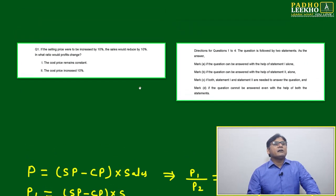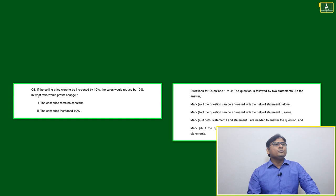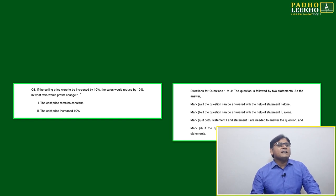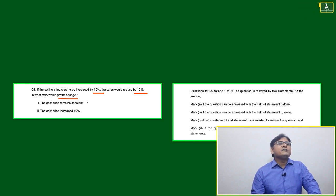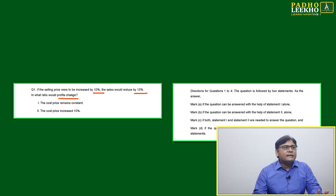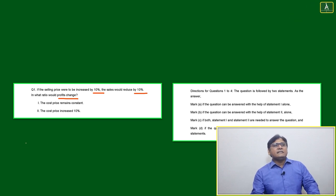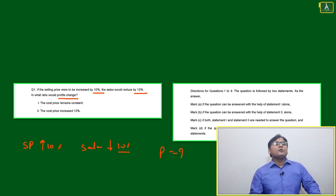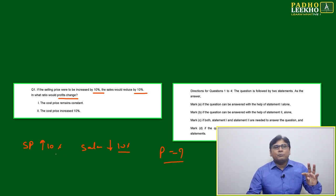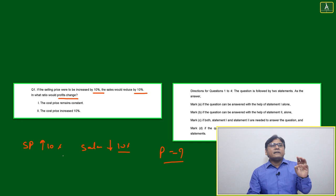Question number one: if the selling price were to be increased by 10 percent, the sales would reduce by 10 percent. In what ratio does the profit change? The question asks us to determine if we can calculate the profit change given that selling price increases by 10% and sales decrease by 10%.